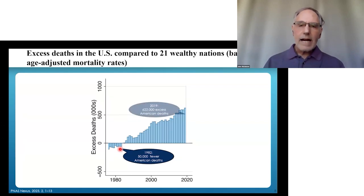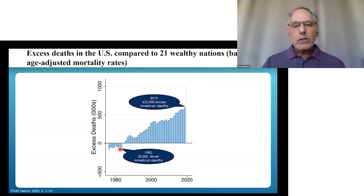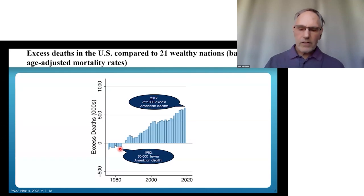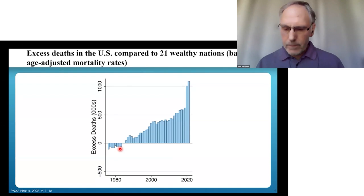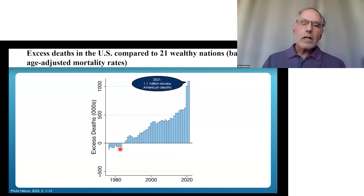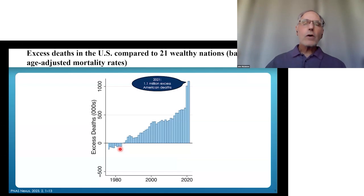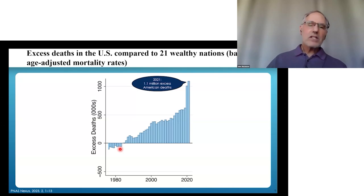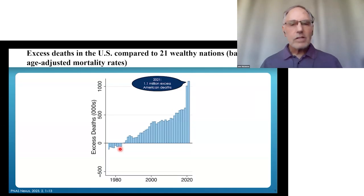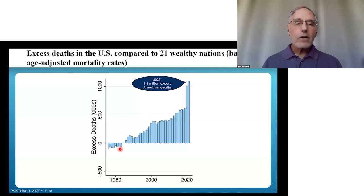But by 2019, before COVID started, there were 622,000 excess American deaths each year compared to citizens of the other wealthy countries. And by 2021, the excess mortality rate leapt up again so that 1.1 million Americans are dying in excess compared to citizens of the other wealthy nations — equivalent to 3,000 deaths every day, like a 9/11 disaster every single day of the year, year in, year out.